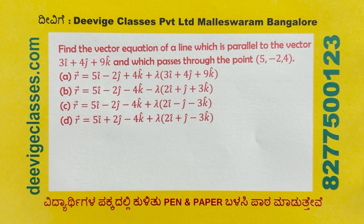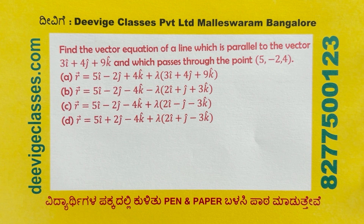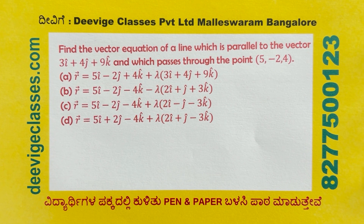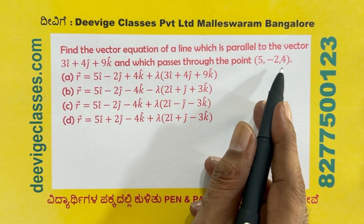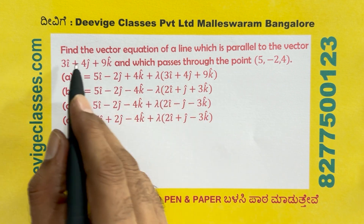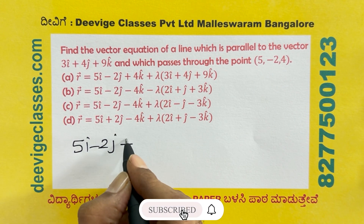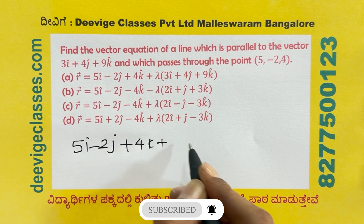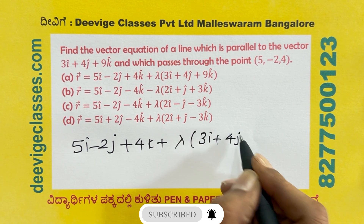Find the vector equation of a line which is parallel to the vector 3i plus 4j plus 9k and which passes through the point (5, minus 2, 4). So vector a is 5i minus 2j plus 4k, and vector b is 3i plus 4j plus 9k. The vector equation is: R = (5i minus 2j plus 4k) plus lambda (3i plus 4j plus 9k).